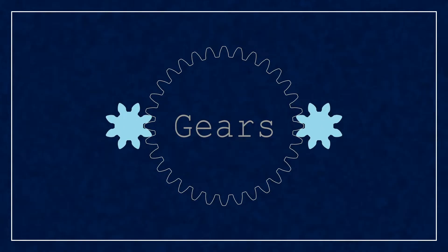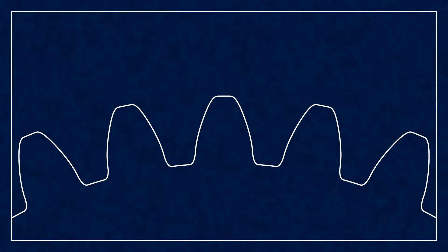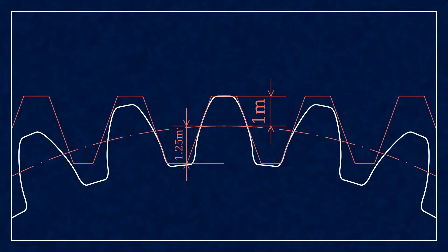One of the great questions to the other video was why the addendum coefficient is exactly one module. So let's play with this idea. Here you have the addendum at 1 module, the dedendum at 1.25 module, it's 25% larger to provide some clearance.